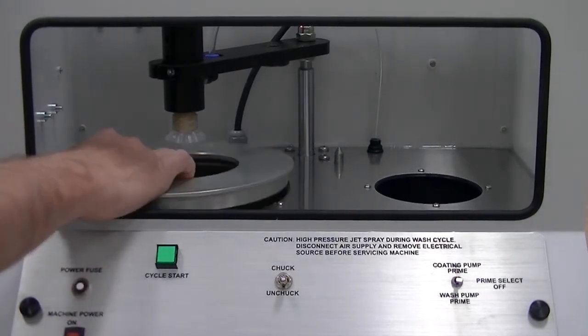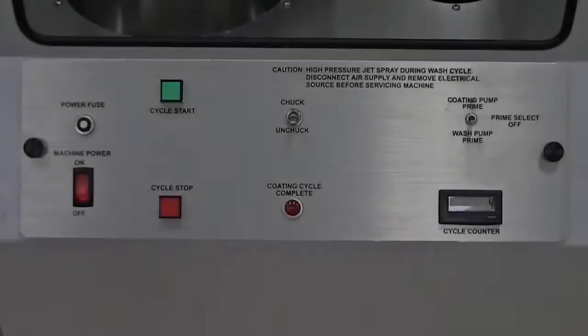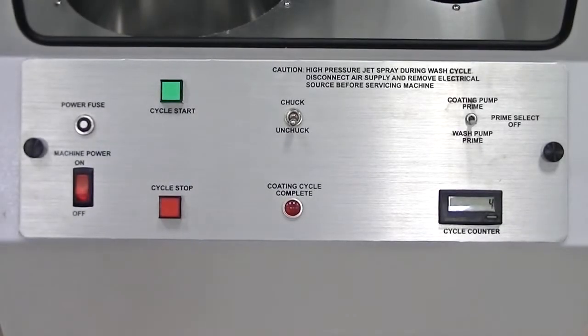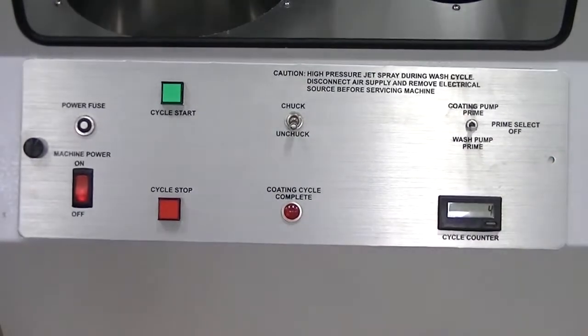Remove washbowl cover. Remove the two black thumb screws from both sides of control panel and sit panel in front of the machine.